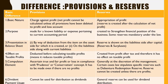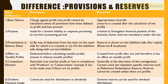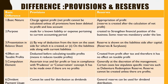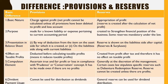Sixth point is dividend payment. Provisions cannot be used for distribution as dividend to owners or shareholders. But in the case of reserves, general reserve can be used for dividend distribution to owners or shareholders.